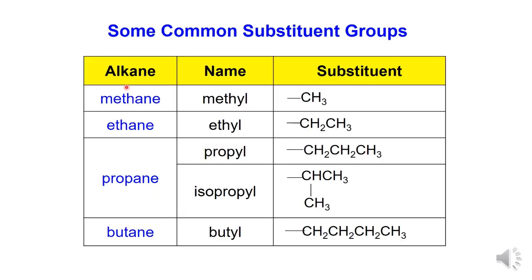Some common names of substituent groups. Starting from one carbon: the structure CH3 is called methyl. Two-carbon: the structure CH2CH3 is called ethyl. The branched two-carbon structure is called isopropyl. And three-carbon: the structure CH2CH3 is called propyl.